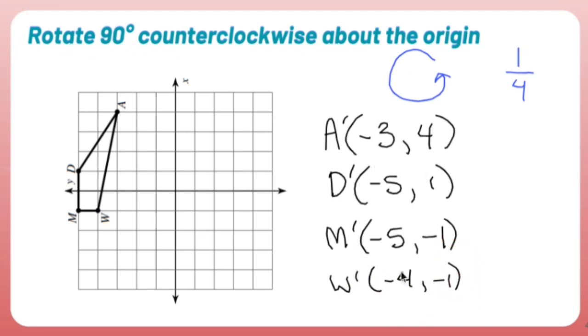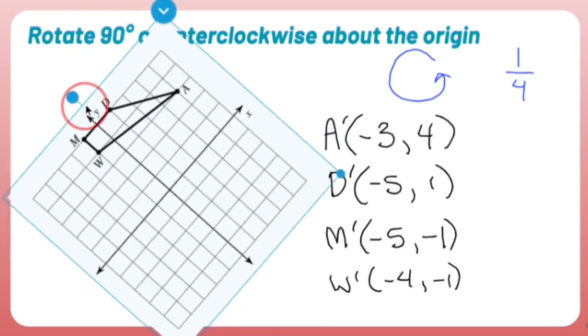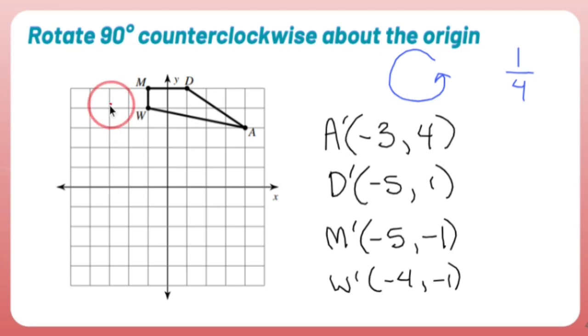Now that I know what my picture is supposed to look like, I can take my picture, my page, whatever it is that I'm working on, and put it back to normal, knowing very well that my answer is going to live somewhere around there. So let's draw these points out. I have A prime, which was negative 3, 4. So A prime, start at the origin, is left 3, up 4. There's my A prime.